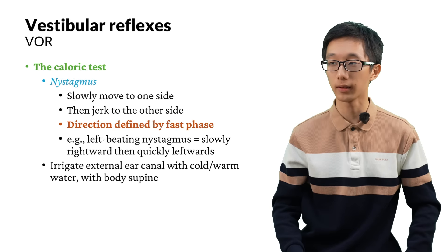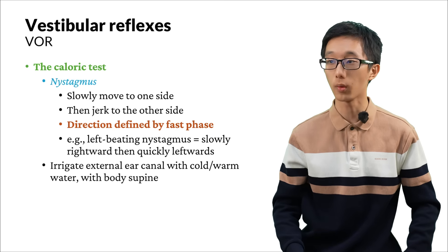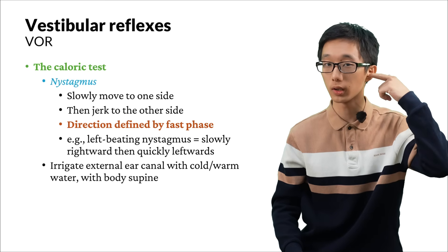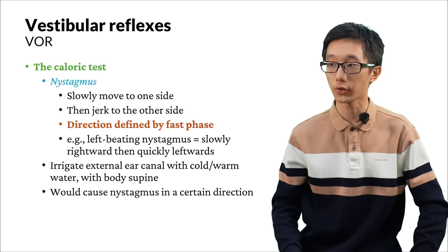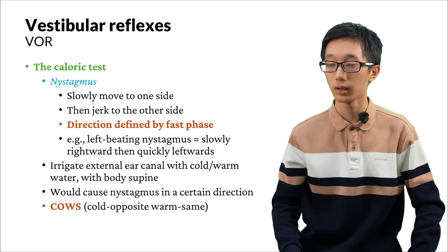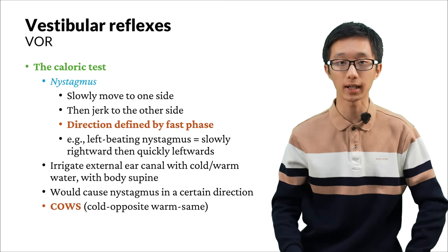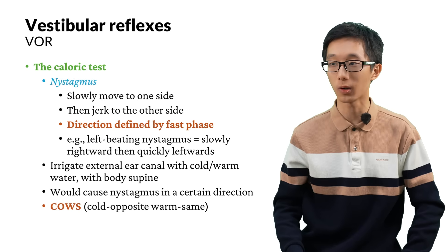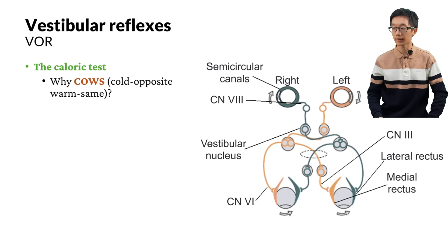If we let a person lie down supine and then irrigate one of their external ear canals with cold or warm water, then we will get nystagmus. The irrigation simply means injecting some water from the outer ear into the canal. The nystagmus in a certain direction can be memorized by this: if we irrigate with cold water, then the nystagmus is beating to the opposite side; if we do warm water, then it is to the same side. This mnemonic is called COWS — cold opposite, warm same.